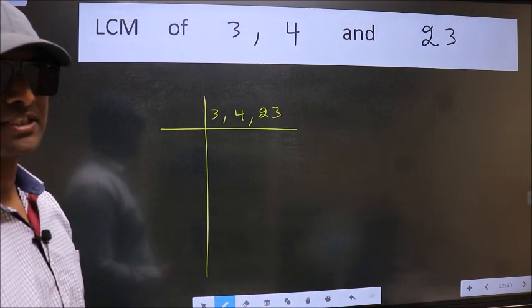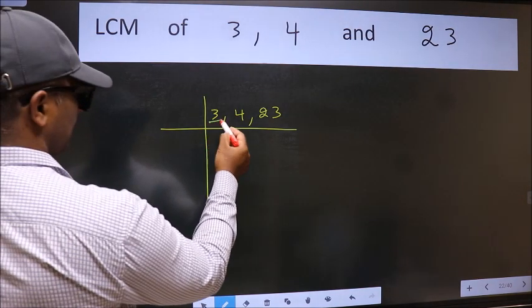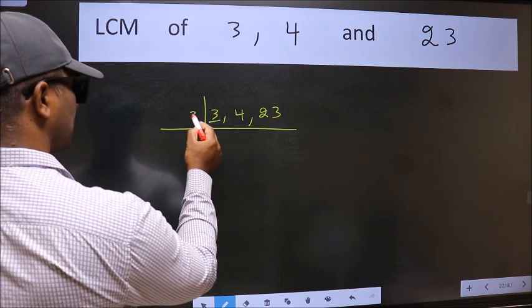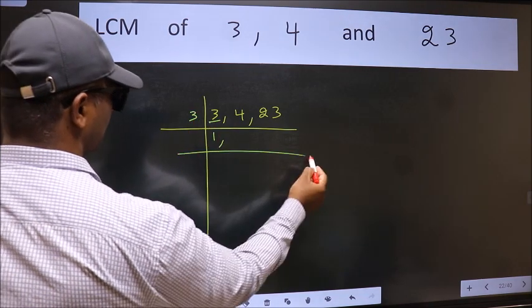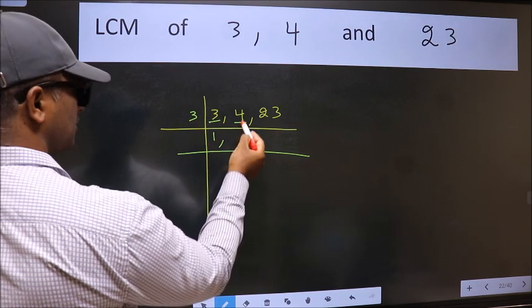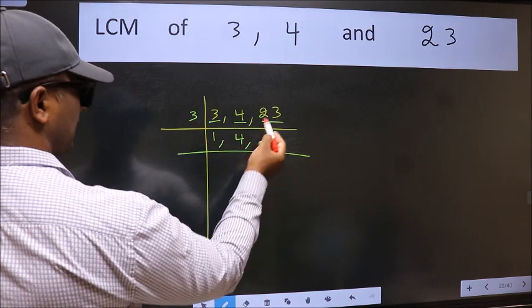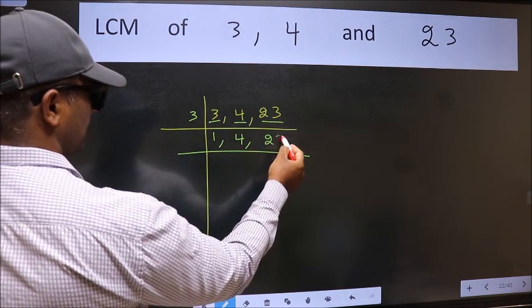Now we should focus on the first number which is 3 here. 3 is a prime number. So 3 divided by 1 is 3. The other number 4 not divisible by 3, so we write it down as it is. The other number 23 not divisible by 3, so we write it down as it is.